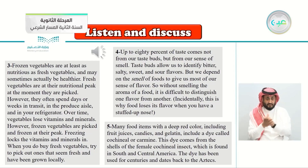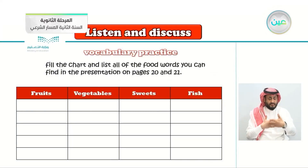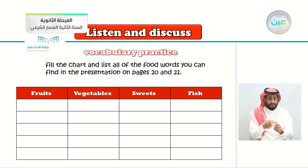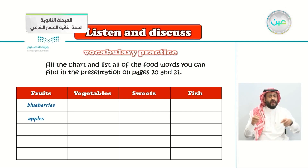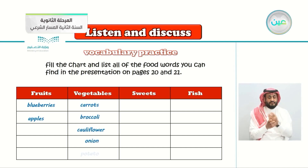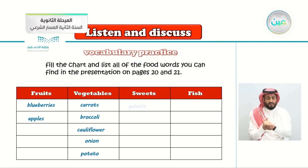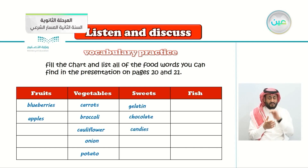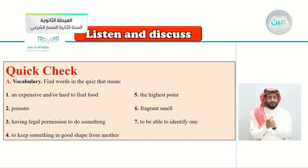Now that we've listened again, let's answer the chart. Fruits mentioned: blueberries and apples. Vegetables: carrots, broccoli, cauliflower, onions, and potatoes. Sweets: gelatin, chocolate, and candies. Fish: only the blowfish was mentioned.